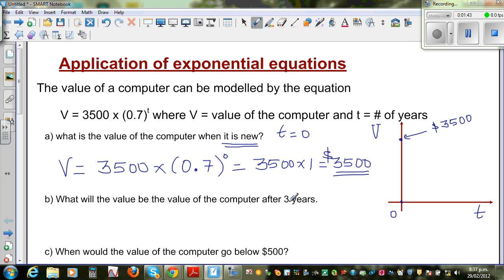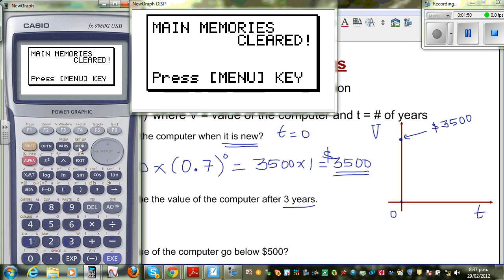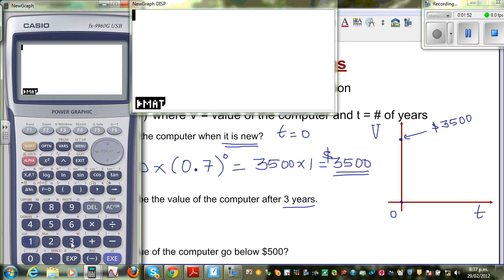What will be the value of the computer after 3 years? Now let me show this on the calculator. Menu, run. So you go 3500 times bracket 0.7 raised to 0. This is the caret key or the power key. 0 is equal to 3500.